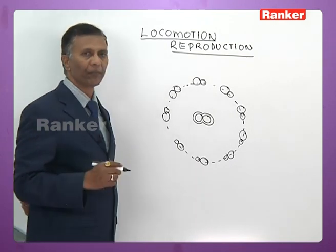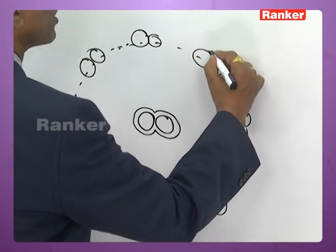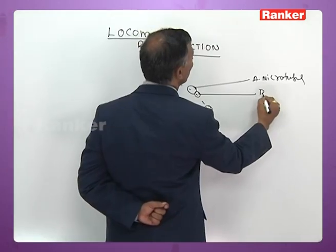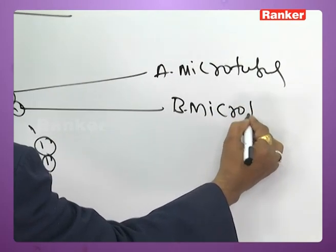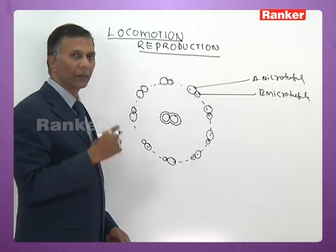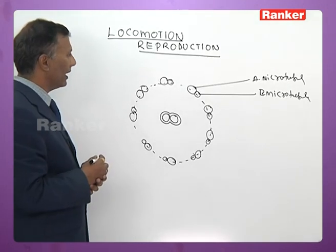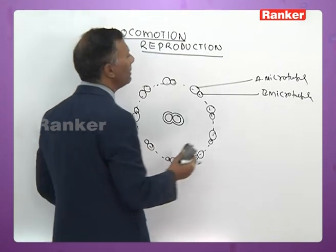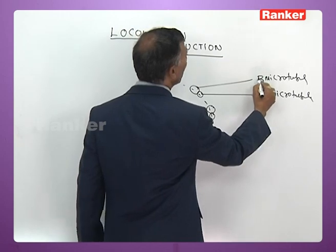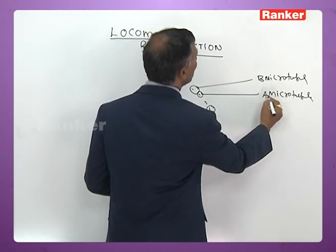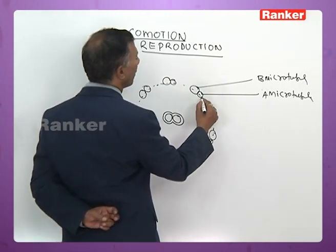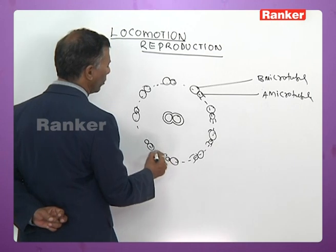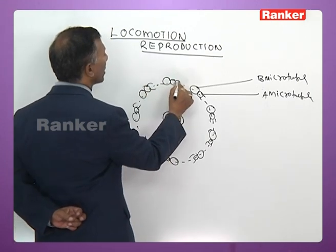There are 9 peripheral microtubules. In these peripheral microtubules, the outer one is called B microtubule and the inner one is called A microtubule. A microtubule is slightly bigger than B microtubule. Each peripheral microtubule is a doublet — named A microtubule and B microtubule. The A microtubule is provided with a pair of short arms, and all these arms are oriented in the same direction.